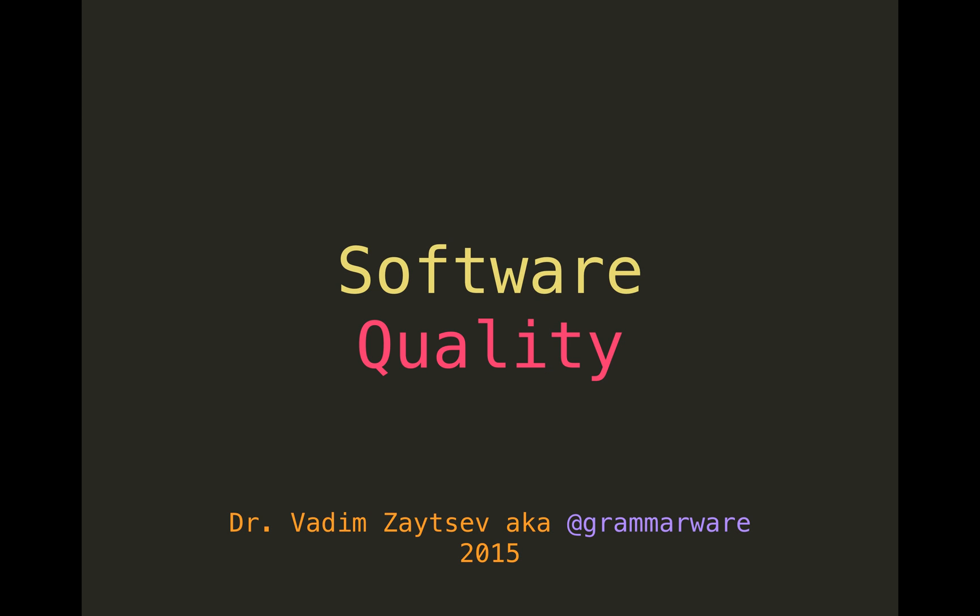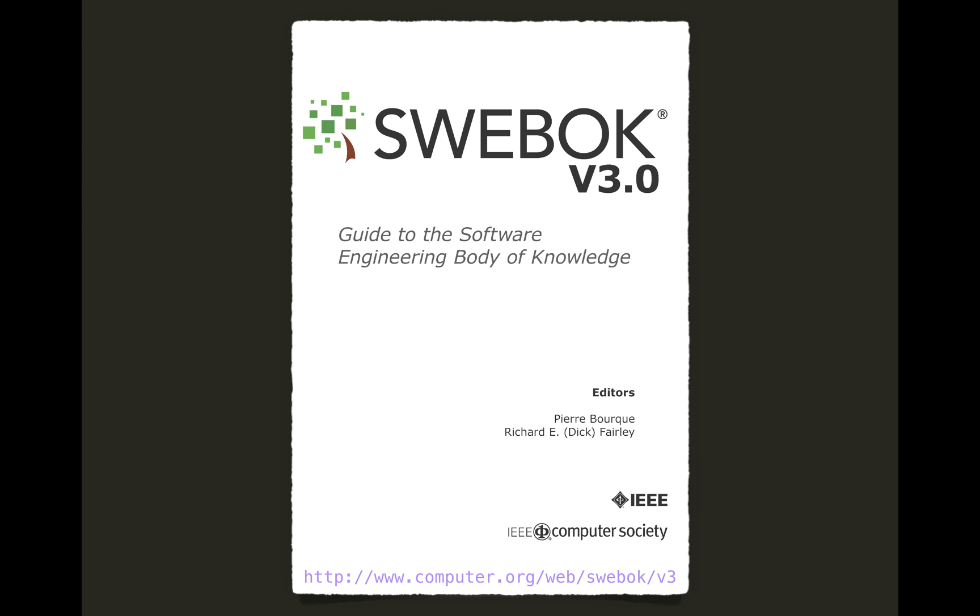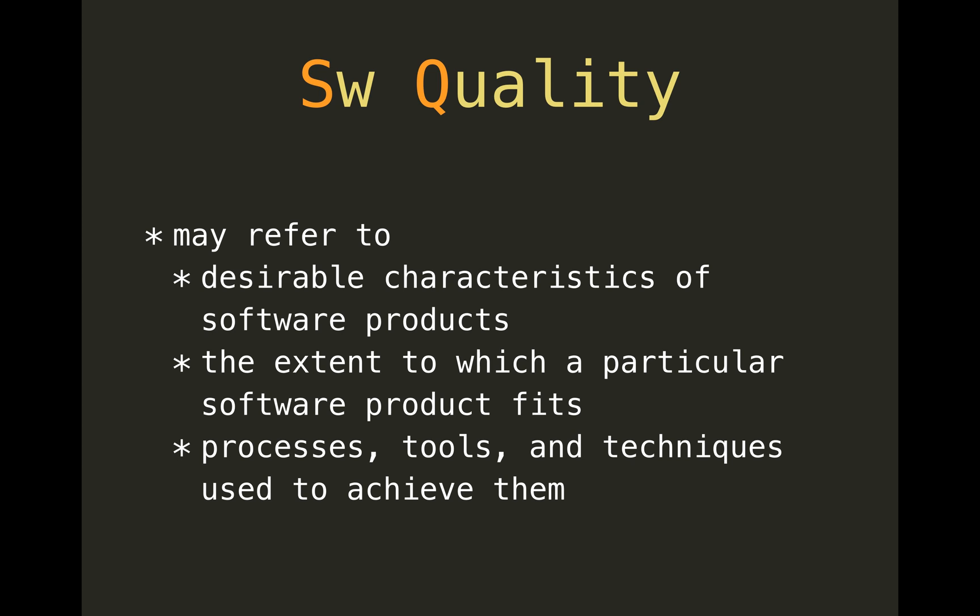Let's talk about software quality — that's topic 10 from the Software Engineering Body of Knowledge. Software quality can refer to one of three things: the characteristics we want to see in a software product; the extent to which a concrete software product fits those characteristics; and the processes used to ensure that fit. All of them can be referred to as software quality, software quality management, assurance, and so on.